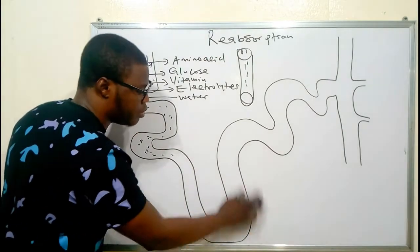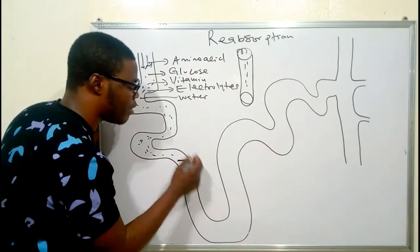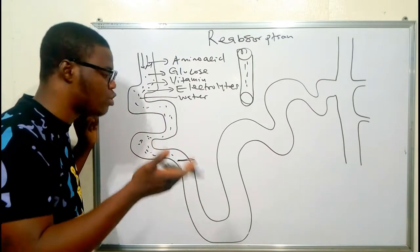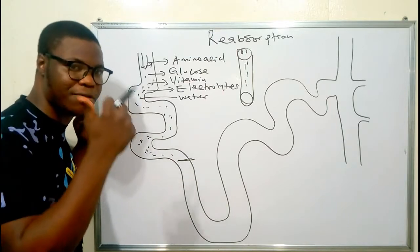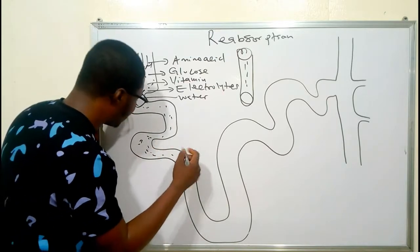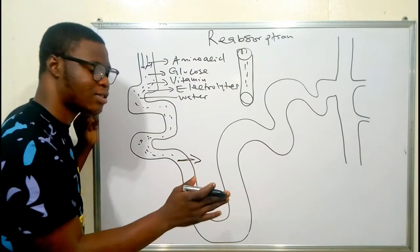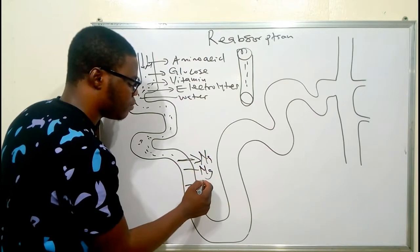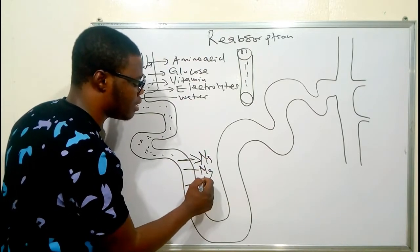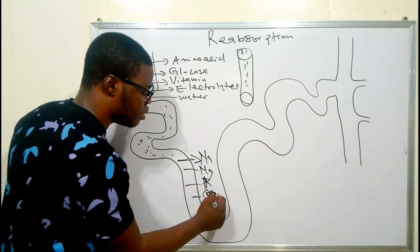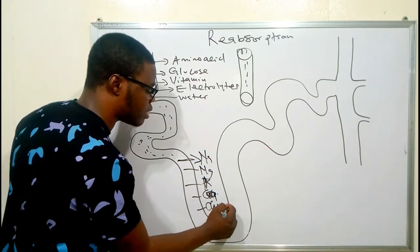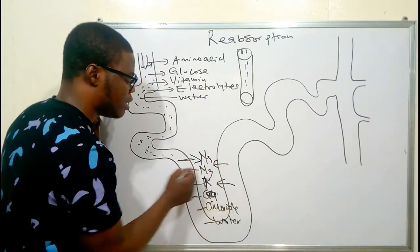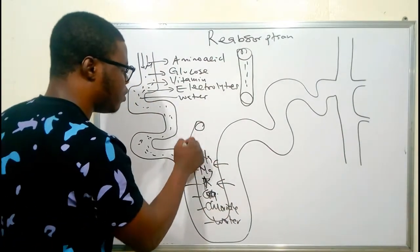Moving to the loop of Henle — the U-shaped part — it is going to reabsorb sodium, magnesium, potassium, calcium, chloride, and water. All of these come back into the bloodstream.